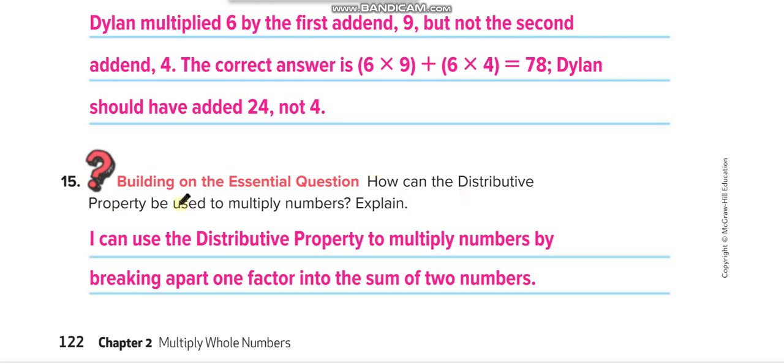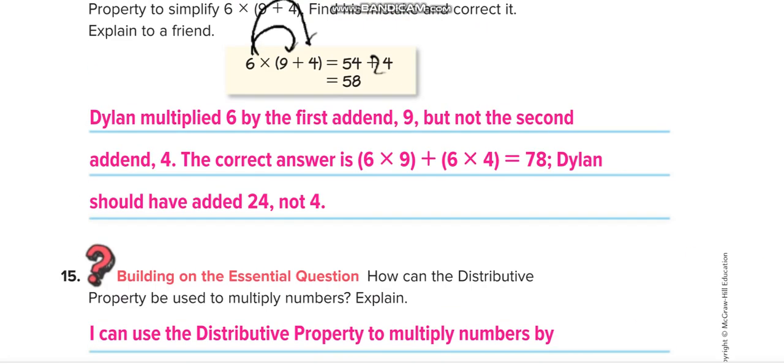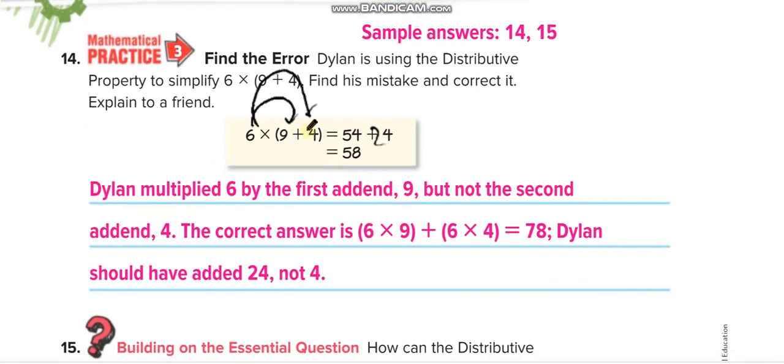How can the distributive property be used to multiply numbers? I can use the distributive property to multiply numbers by breaking apart one factor into the sum of two numbers, like here we break it into a sum of two numbers.